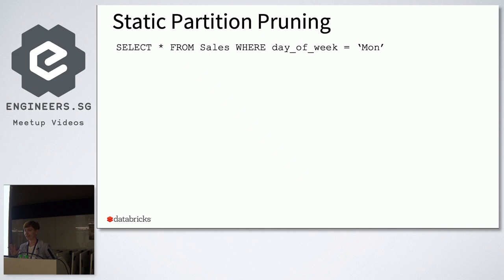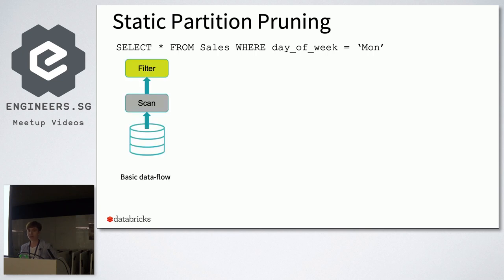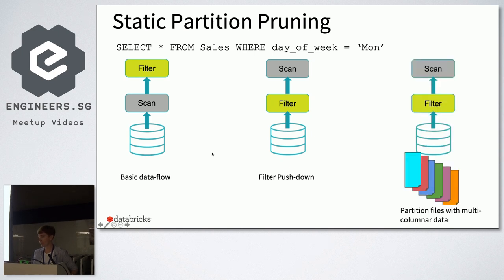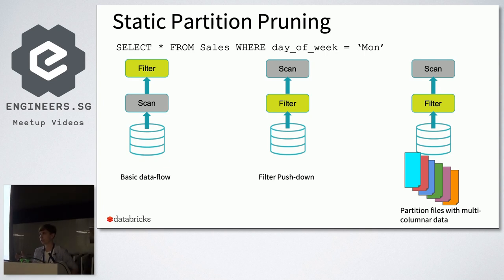First, let's remember how static partition pruning works. Suppose we have this simple query. The basic data flow is: first you scan the table, then you apply the filter. But in normal pipelines we use push-down — so first we filter, then we scan only what we need. And if you have partitioned tables, first we filter by partitions and just skip what we don't use.